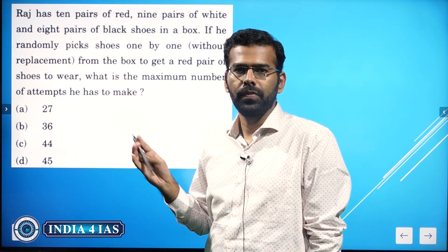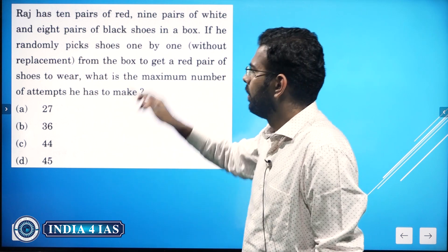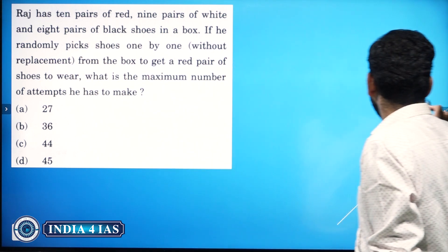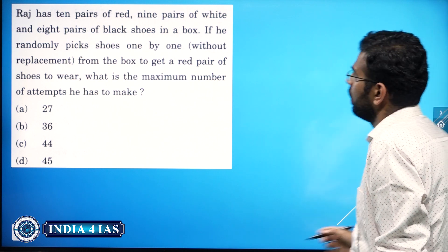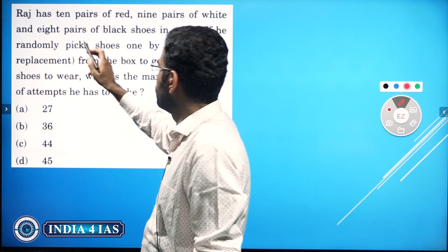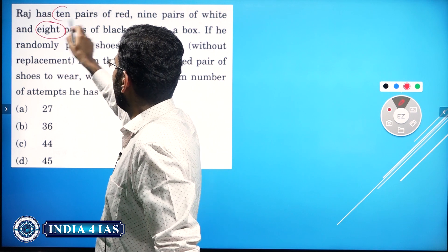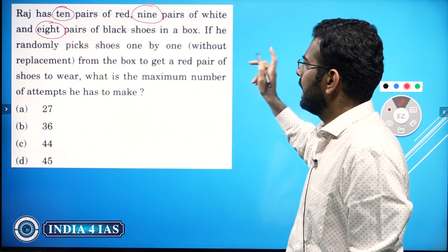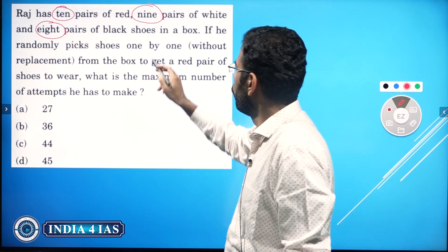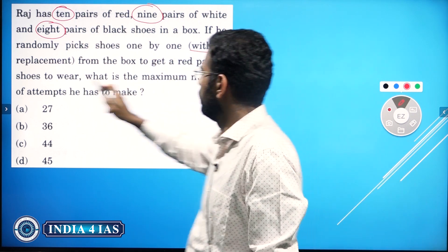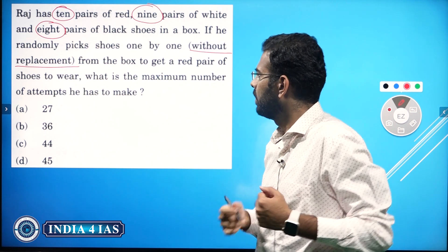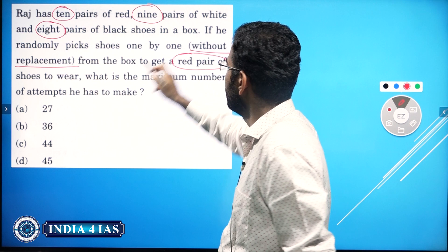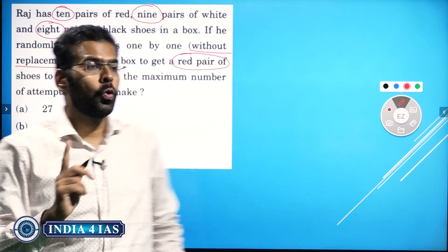Now see the question: Raj has ten pairs of red, nine pairs of white, and eight pairs of black shoes in a box. If he randomly picks shoes one by one without replacement from the box to get a red pair of shoes, what is the maximum number of attempts he has to make?